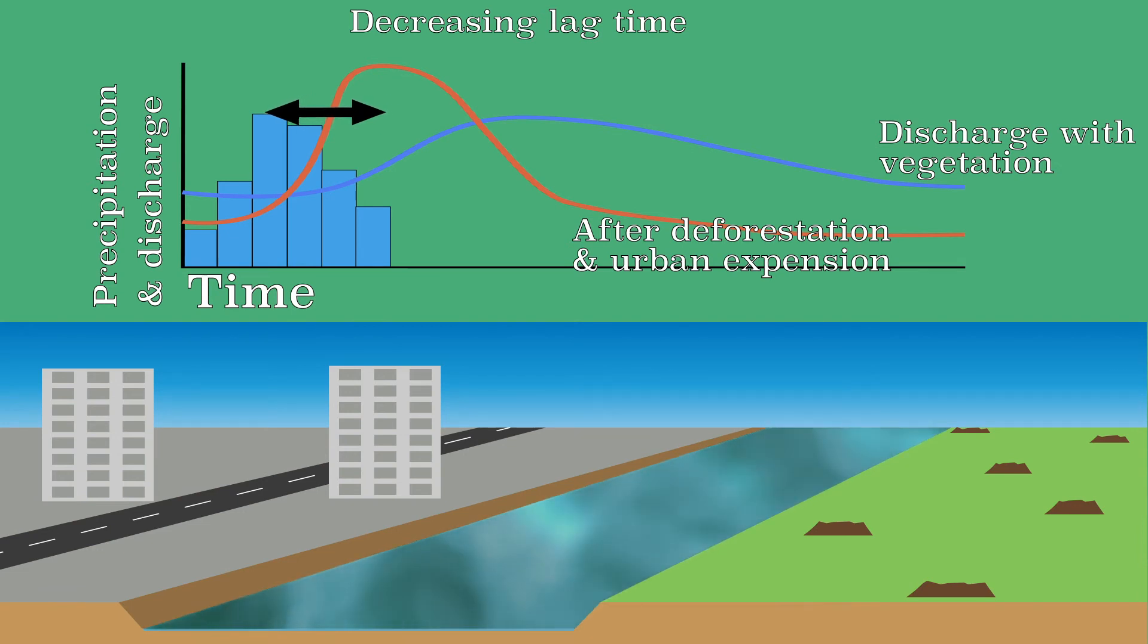There is little time between the moment of precipitation and the peak discharge. The peak discharge is also getting a lot higher. All the water ends up in the river at the same time, which means that the peak discharge is higher, which increases the risk of flooding.